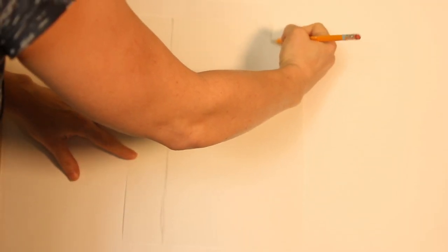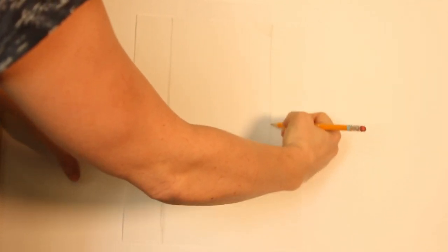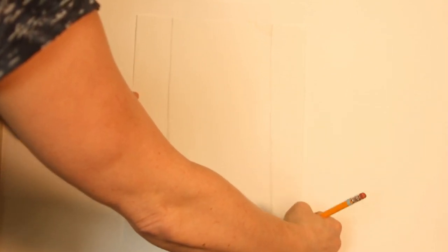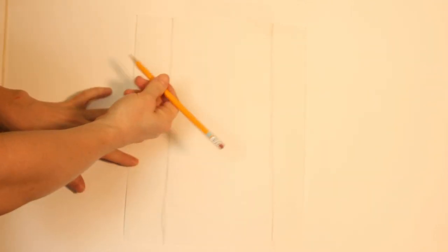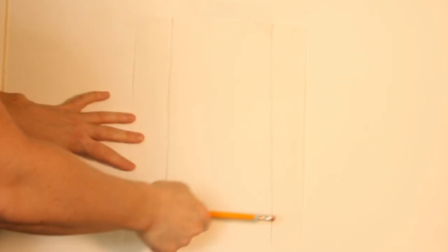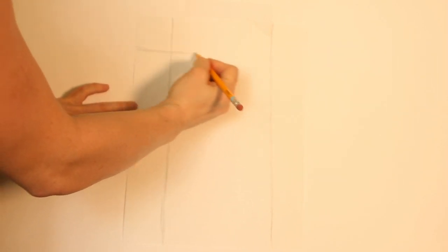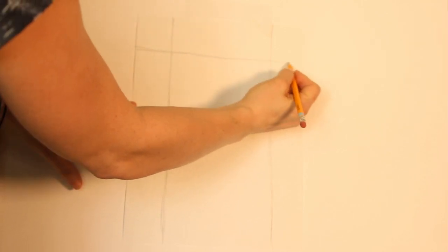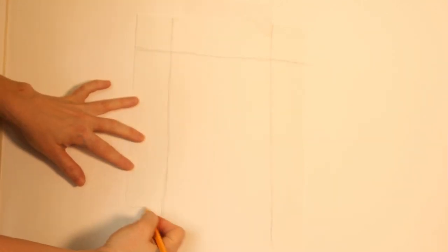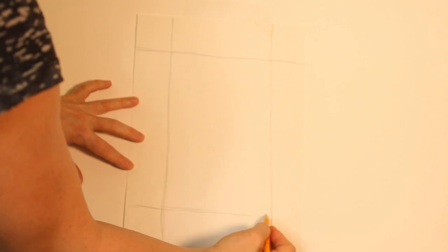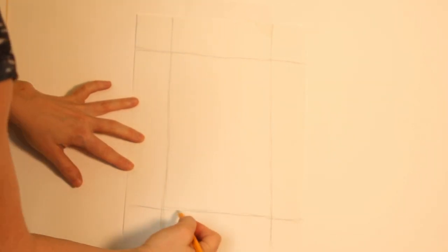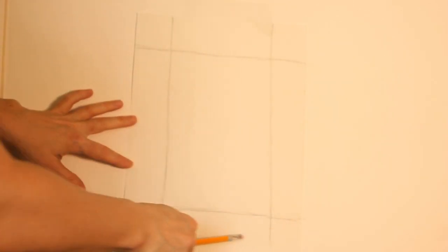So we're starting at the top. We're going all the way to the bottom on both sides. And we're going to do the same thing on the top and the bottom, going from side to side. So this here on the outside is the border.